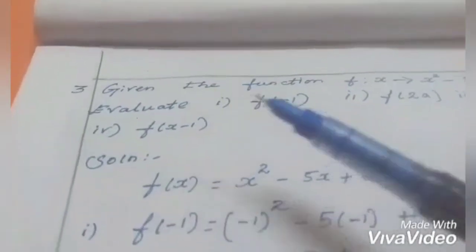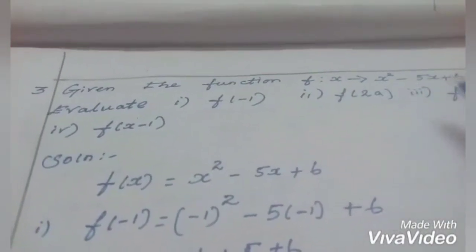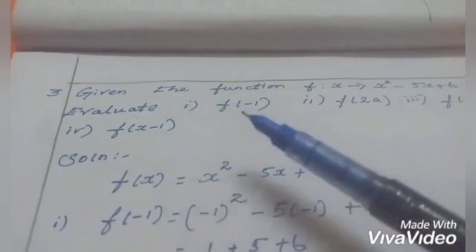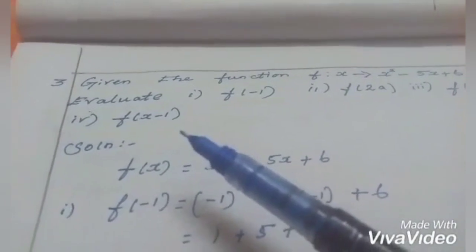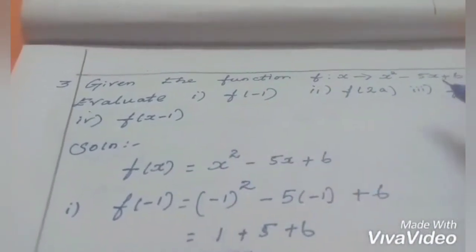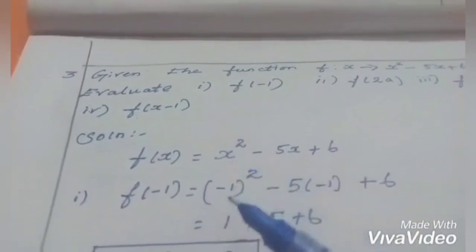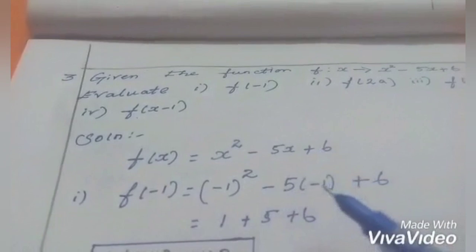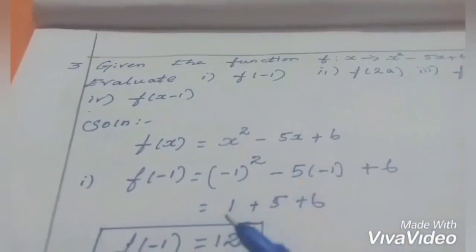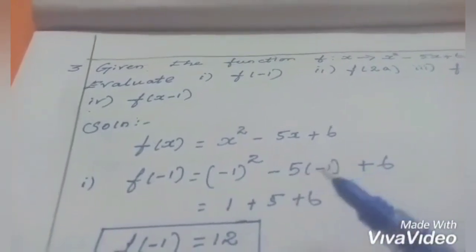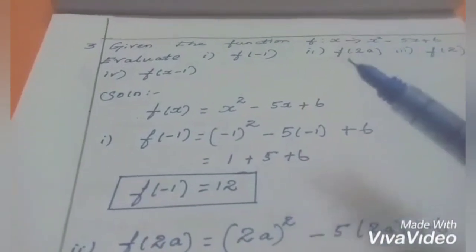Third question: given the function f(x) = x² - 5x + 6, evaluate f(-1), f(2a), f(2), and f(x-1). For f(-1), substitute x = -1: (-1)² - 5×(-1) + 6 = 1 + 5 + 6 = 12. So f(-1) = 12.